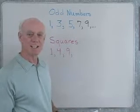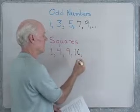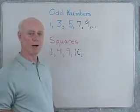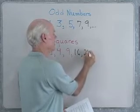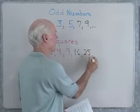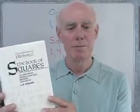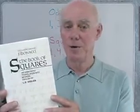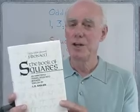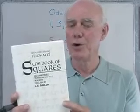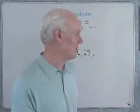E poi, venticinque. Qui ha il libro dei quadrati, scritto da Fibonacci durante l'anno dodici venticinque — 1225.